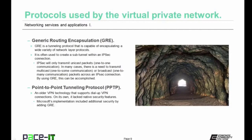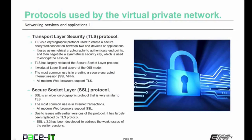On its own, PPTP lacked native security features, so it wasn't very secure. But Microsoft's implementation included additional security by adding GRE to point-to-point tunneling protocol. Transport layer security is another common VPN protocol. TLS is a cryptographic protocol used to create a secure encrypted connection between two end devices or applications. It uses asymmetrical cryptography to authenticate endpoints and then negotiates a symmetrical security key, which is used to encrypt the session.